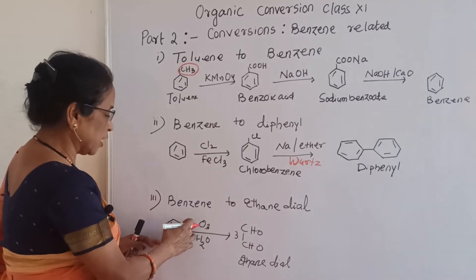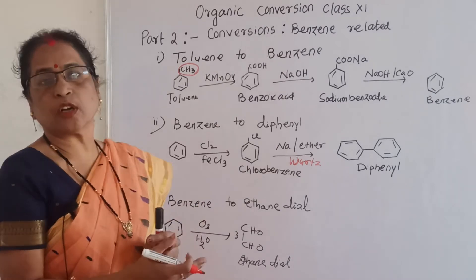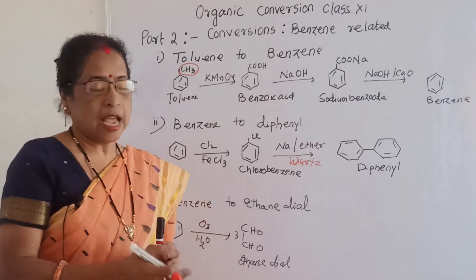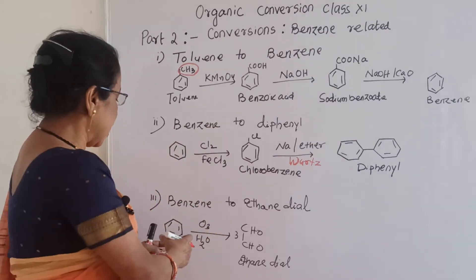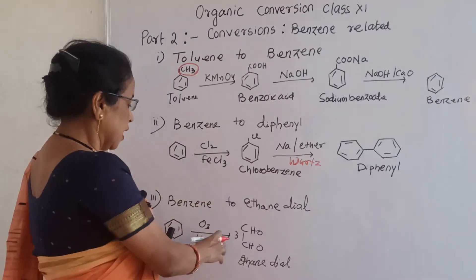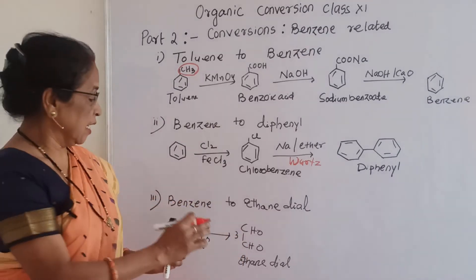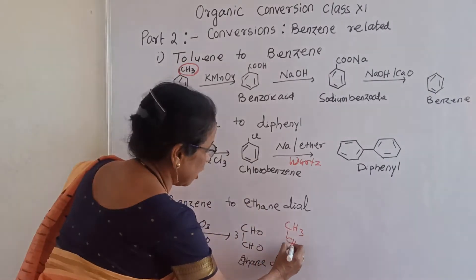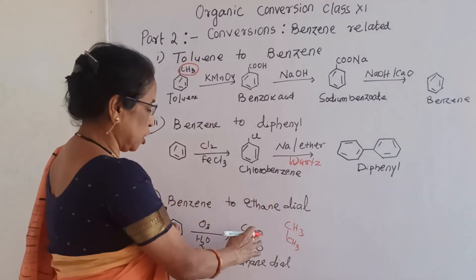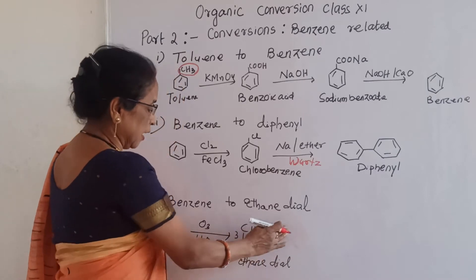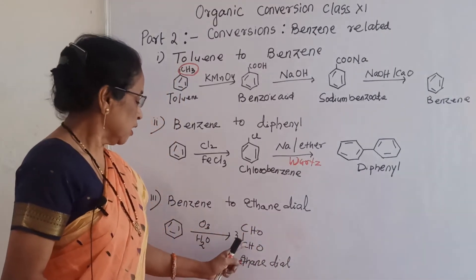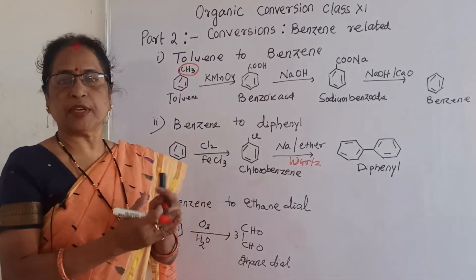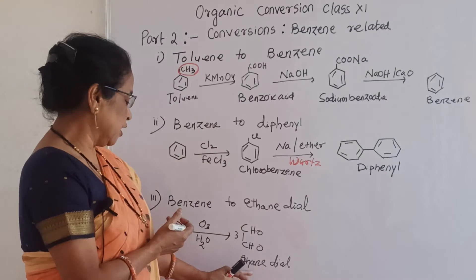Benzene to ethanedial: benzene is treated with ozone (O3) and water. This process is called ozonolysis. When you treat with O3, an ozonide is formed; the ozonide with water gives the product ethanedial. The structure corresponds to ethene where two hydrogens are replaced by oxygen (aldehyde groups), which is why it is called ethanedial.